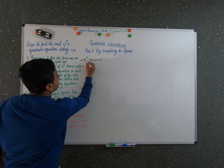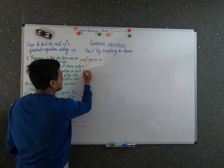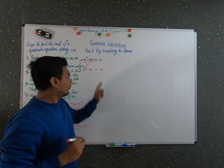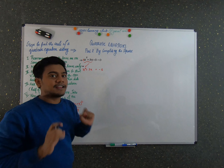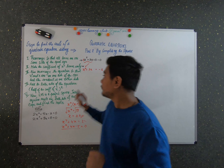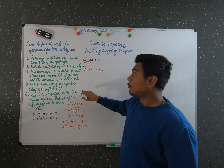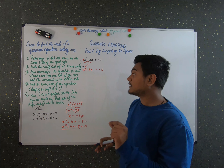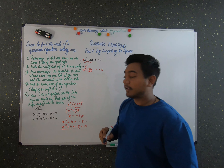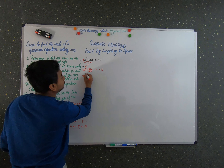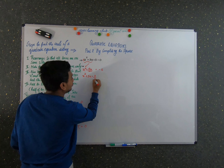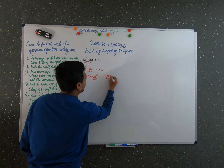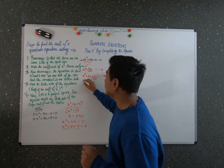For Problem 1, we already satisfy the first two steps since the coefficient of x squared is 1. So rearranging: x squared plus 3x equals minus 5. The next step says to add to both sides half the coefficient of x, squared. The coefficient of x is 3, so we add (3/2) squared to both sides: x squared plus 3x plus (3/2)² equals minus 5 plus (3/2)². We do this so the left-hand side becomes a perfect square.